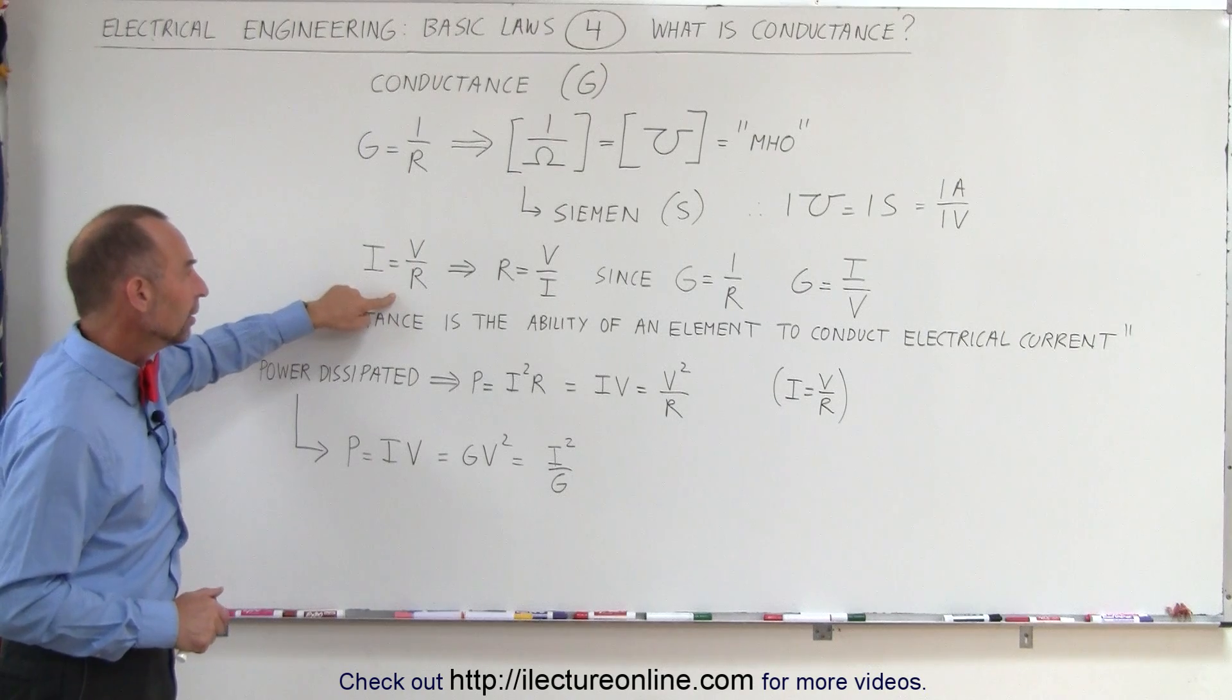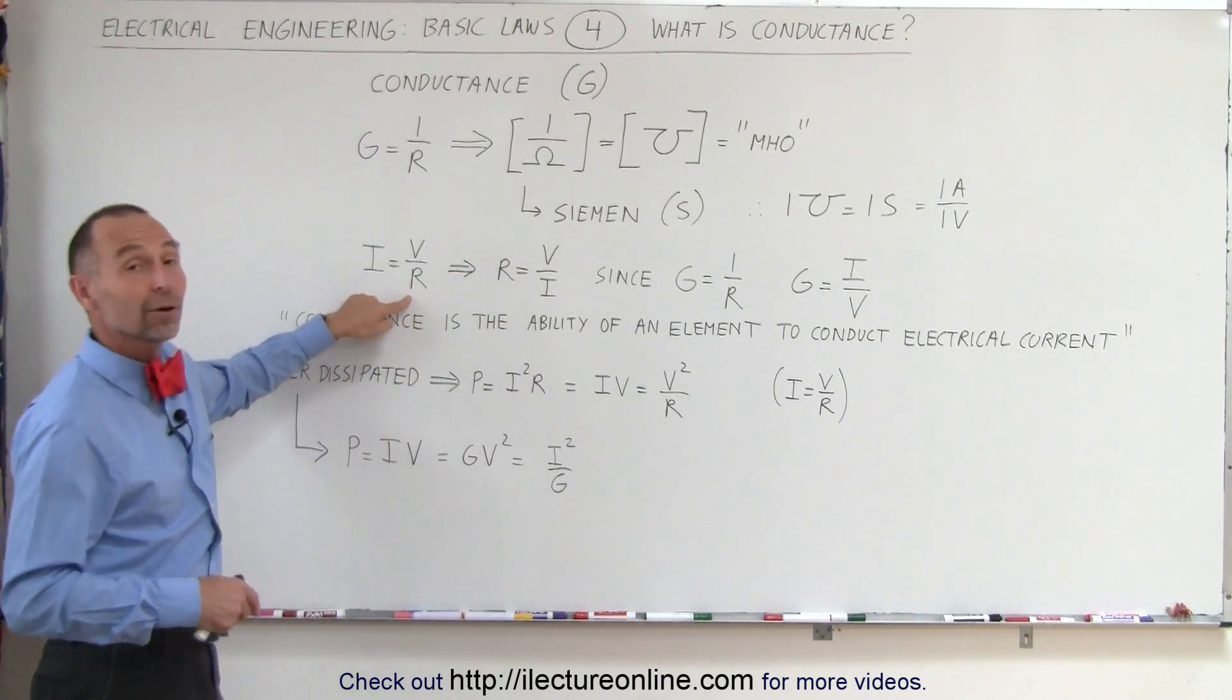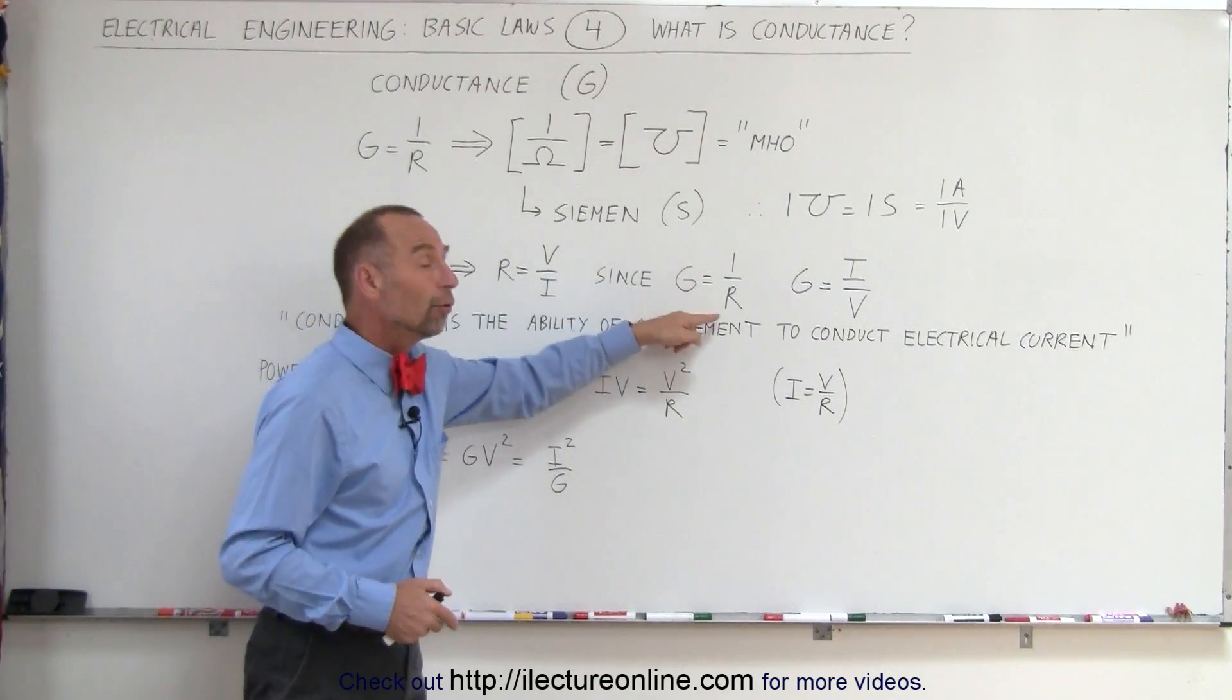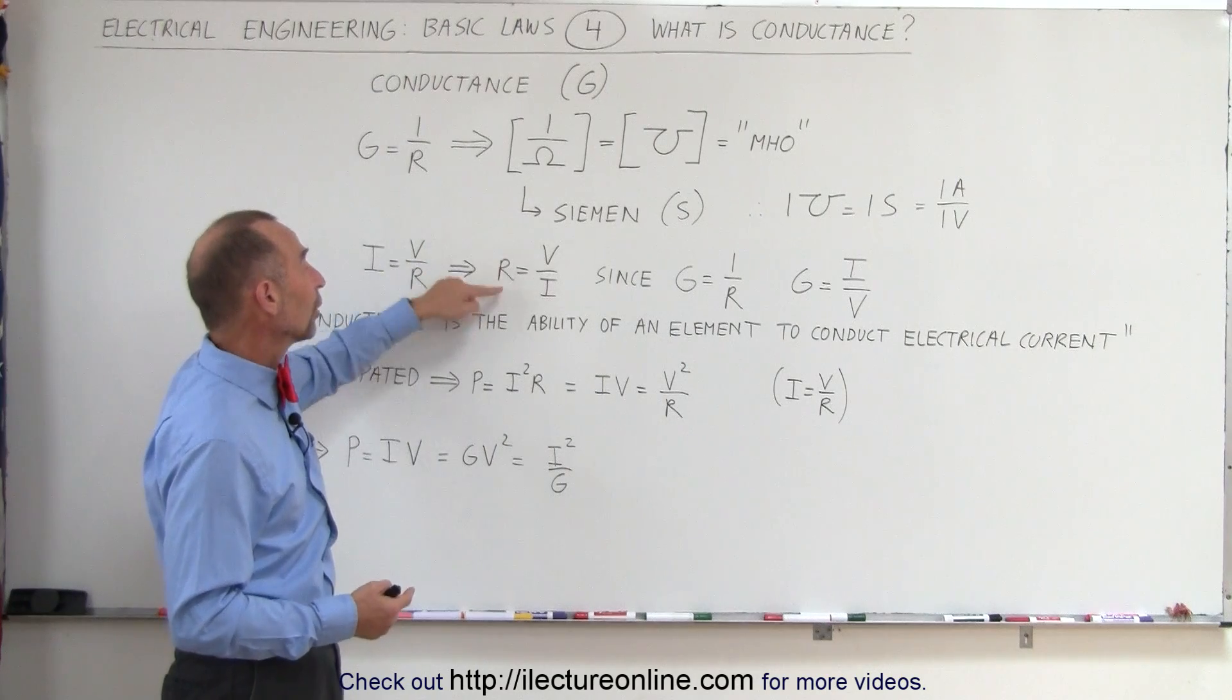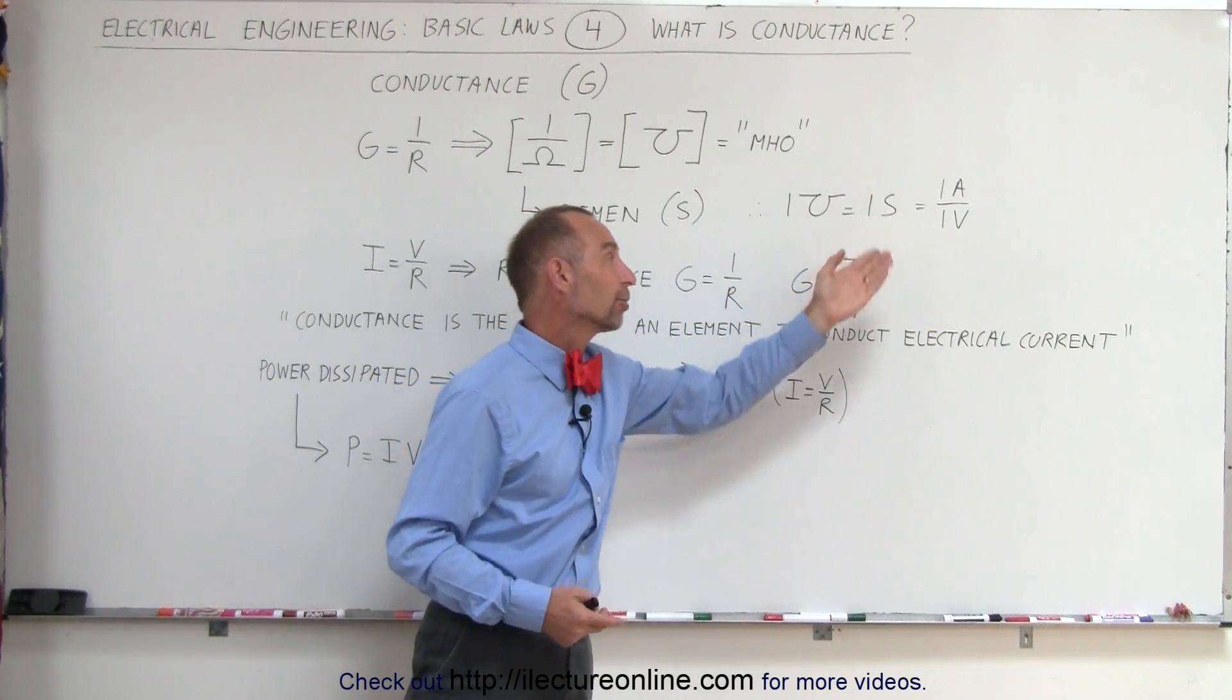Since I is equal to V over R, and since R is equal to V divided by I, simply solving Ohm's law for the resistance, and since G is one over R, you can then see that we can write G, which is one over R, as I over V, and again the units, amps per volt.